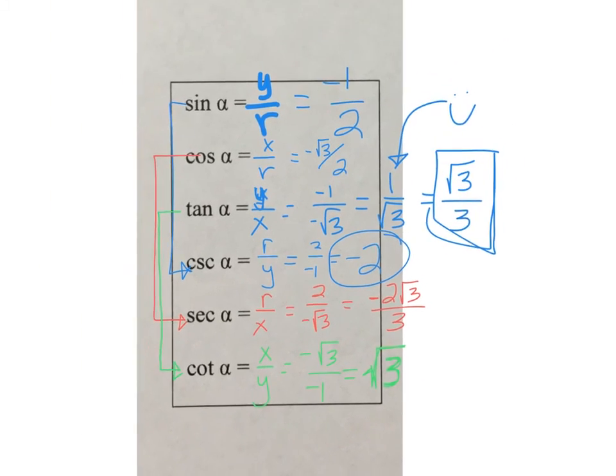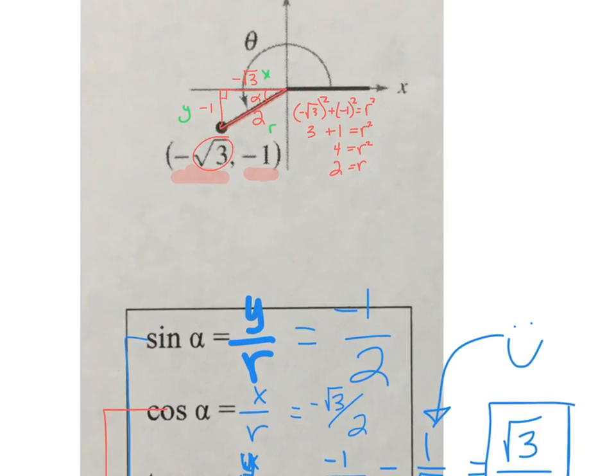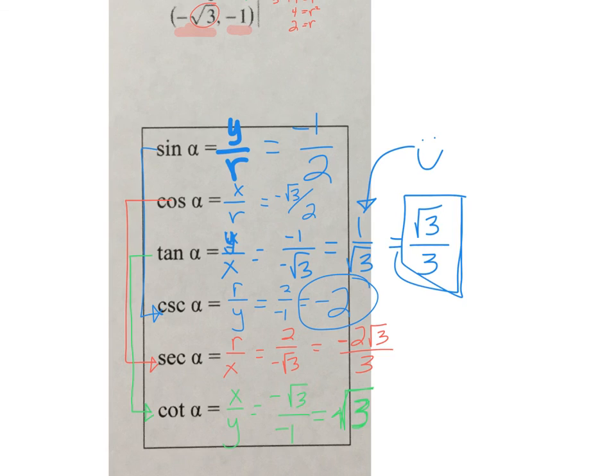So if we're given a point, we're able to take that point and calculate the radius, and knowing our six trig ratios, we can write down all of the values from there.